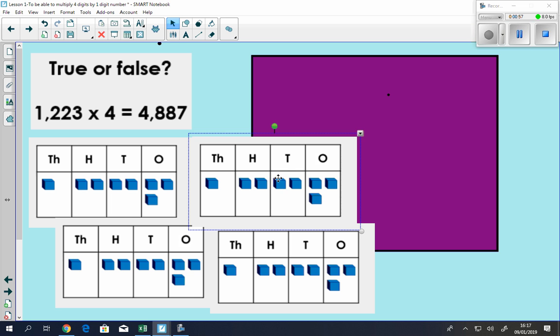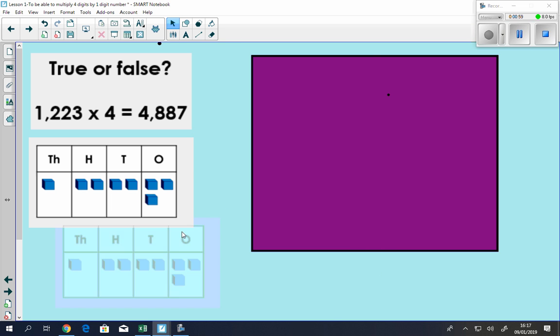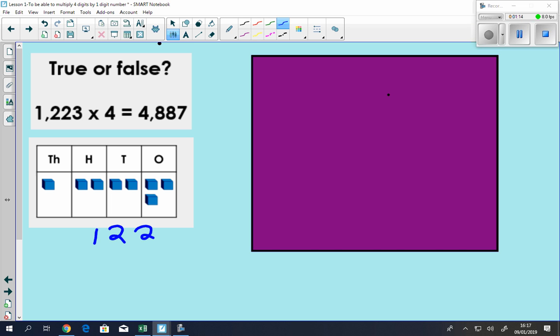And the way to do that is to make sure we line everything up. If you look at the success criteria again, line everything up in our place value columns. So we have 1,223 multiplied by 4, multiply that out.